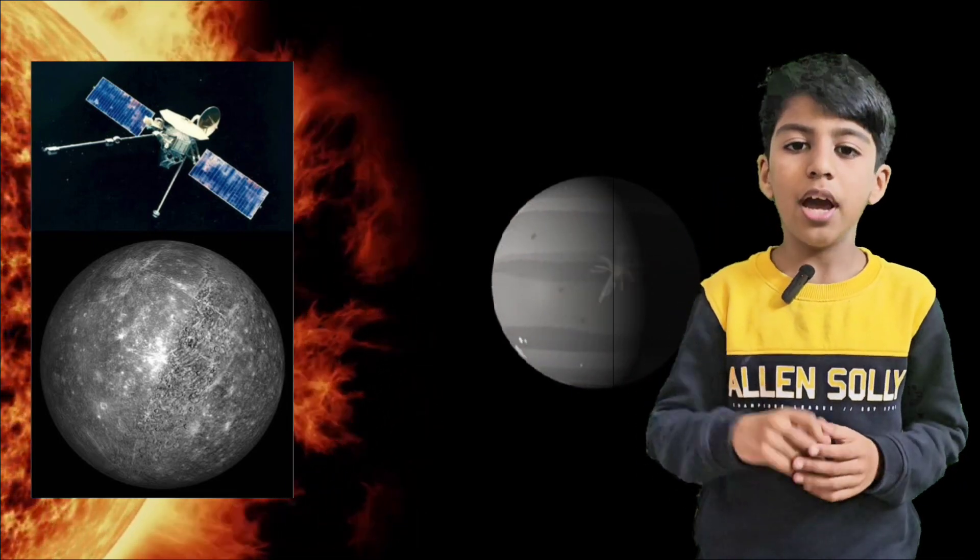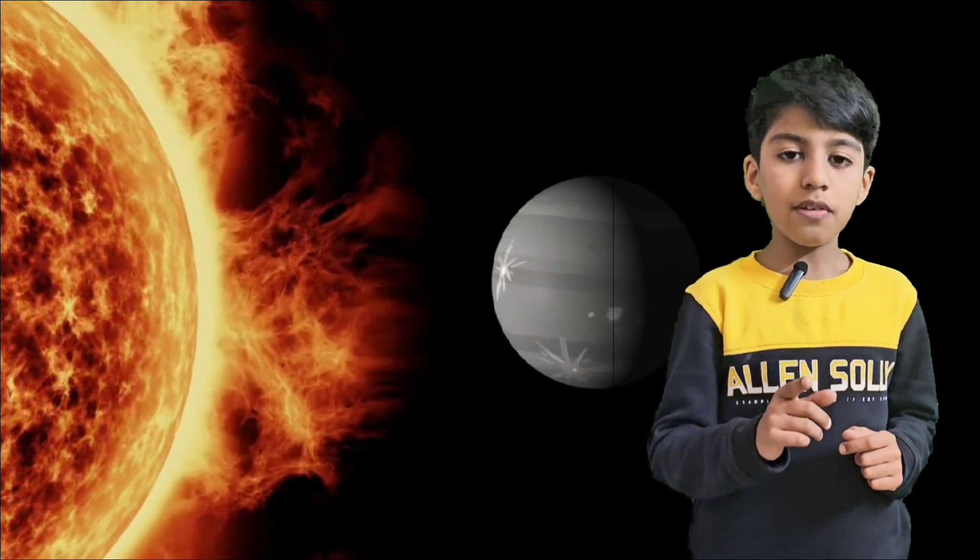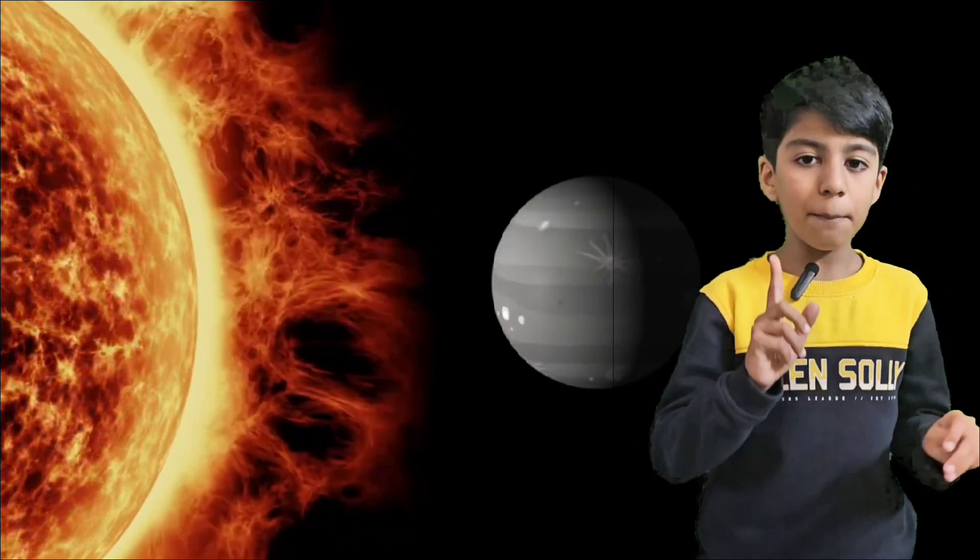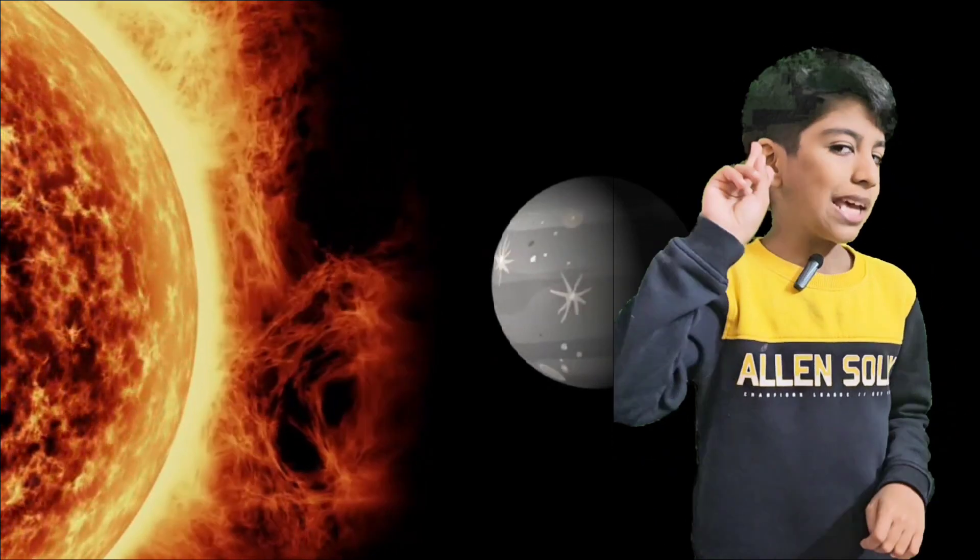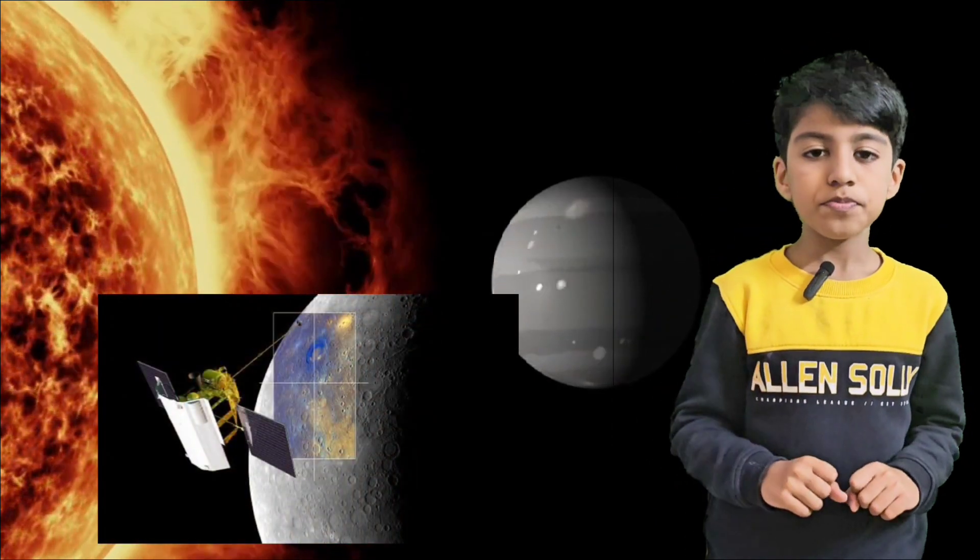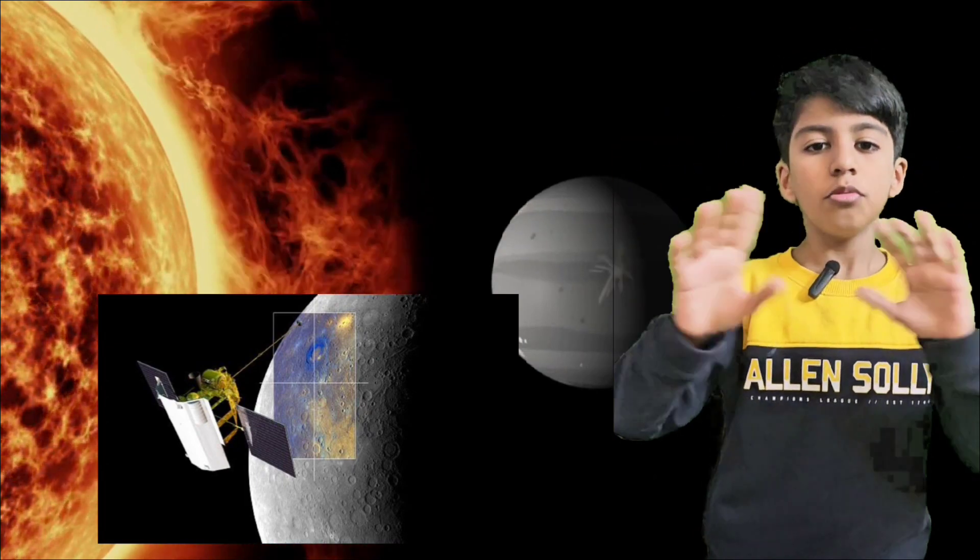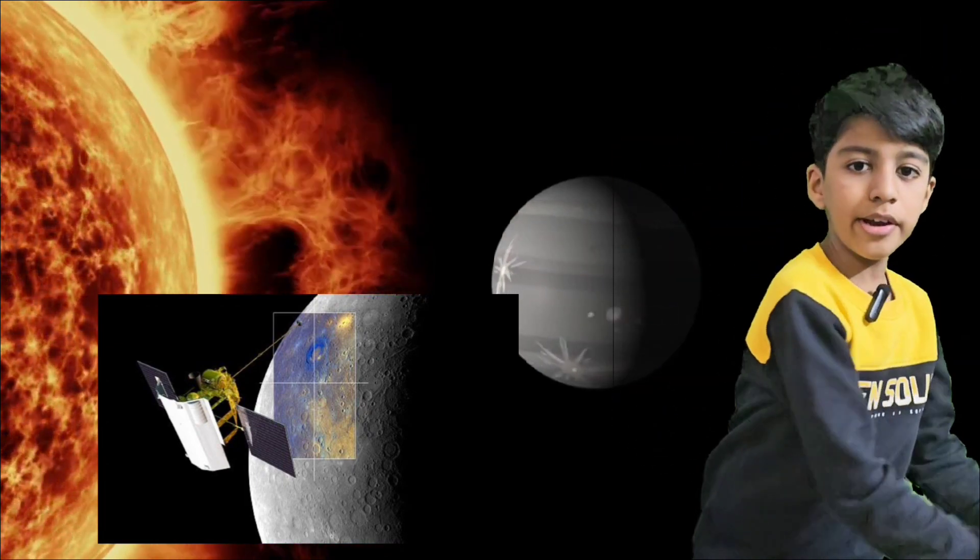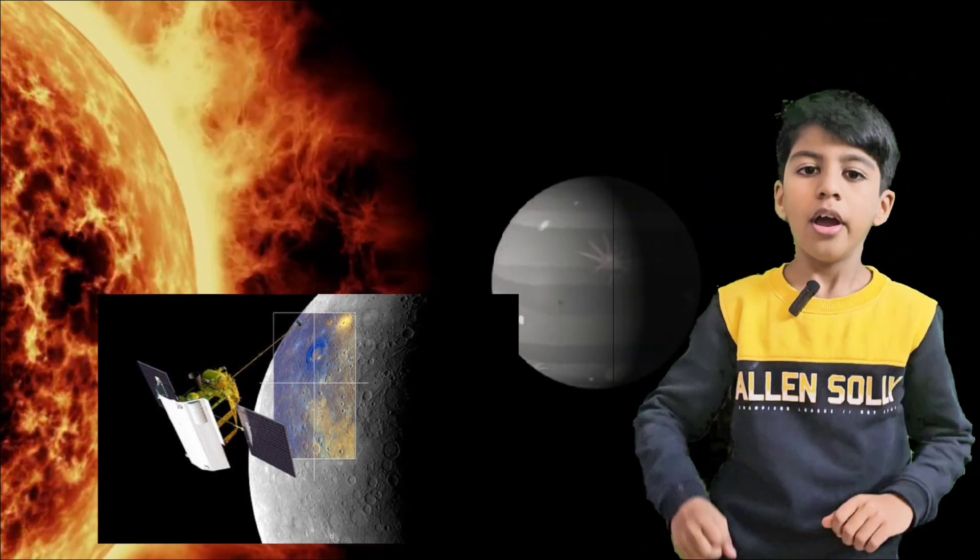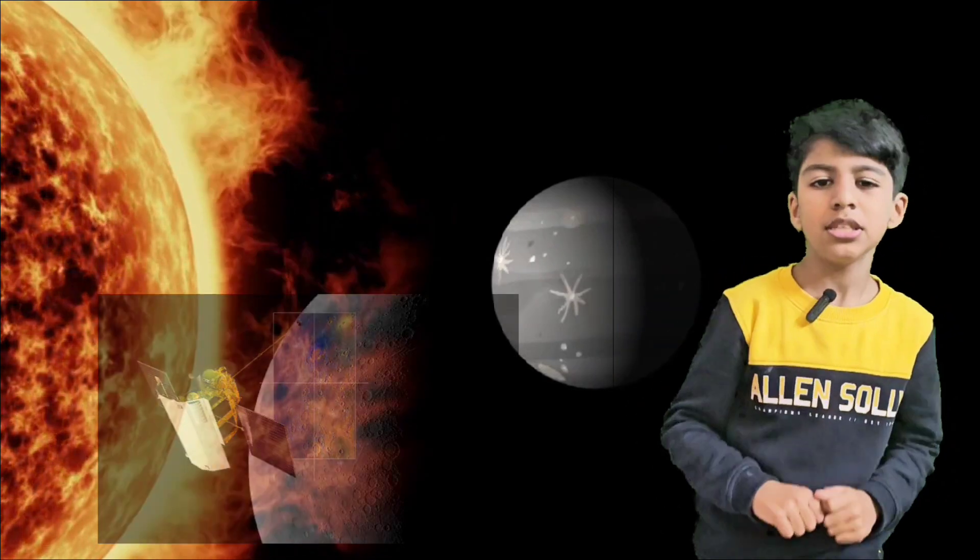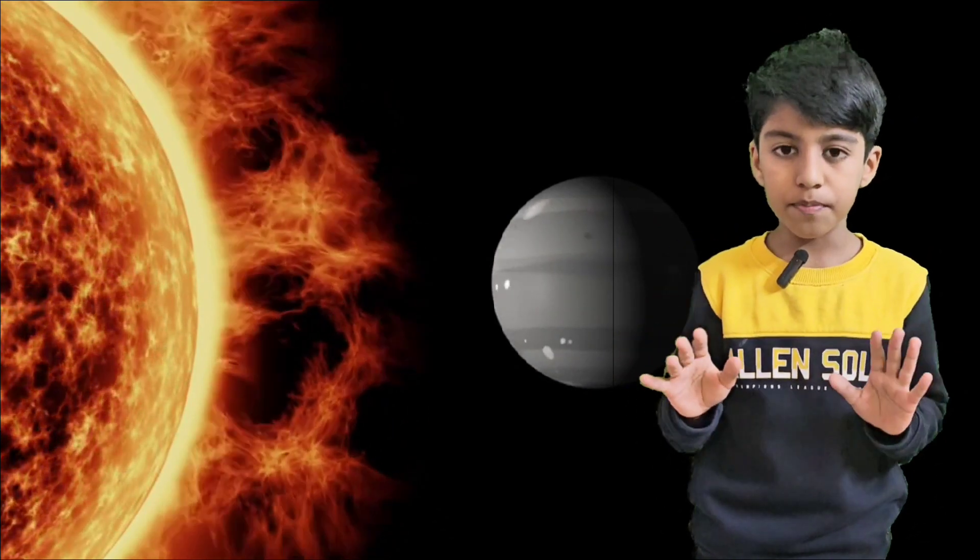The second one was Messenger. It orbited around Mercury from 2011 to 2015, until crashing into its surface in April 30, 2015.